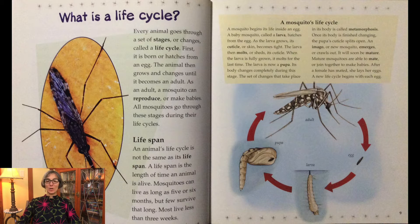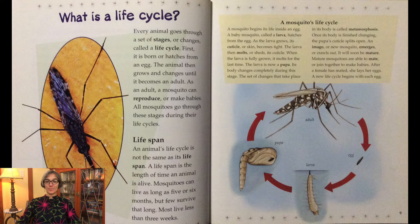A mosquito begins its life inside an egg. A baby mosquito called a larva hatches from the egg. As the larva grows, its cuticle or skin becomes tight. The larva then molts or sheds its cuticle. When the larva is fully grown, it molts for the last time. The larva is now called a pupa. Its body changes completely during this stage. The set of changes that takes place in its body is called metamorphosis. Scientists, can you say that big word? Metamorphosis.